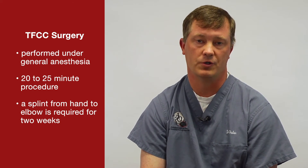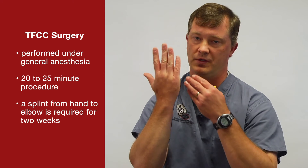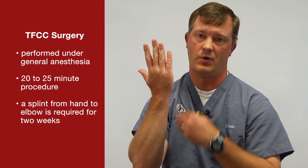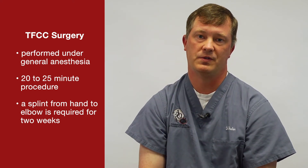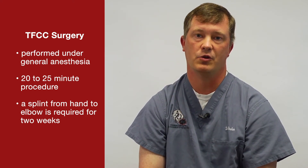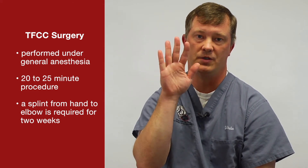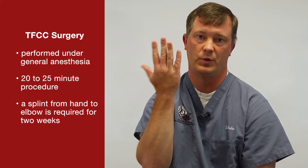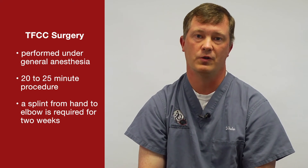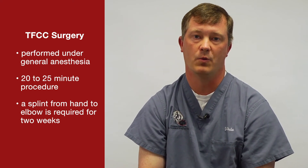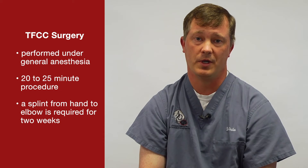Surgery typically takes somewhere between 20 to 25 minutes — it's not a long surgery. Once you wake up, you'll have a splint that starts here, wraps around the elbow and back. The purpose behind including the elbow is we want to prevent that supination/pronation or twisting of the wrist. The only way to prevent that is to include the elbow with regards to immobilization.